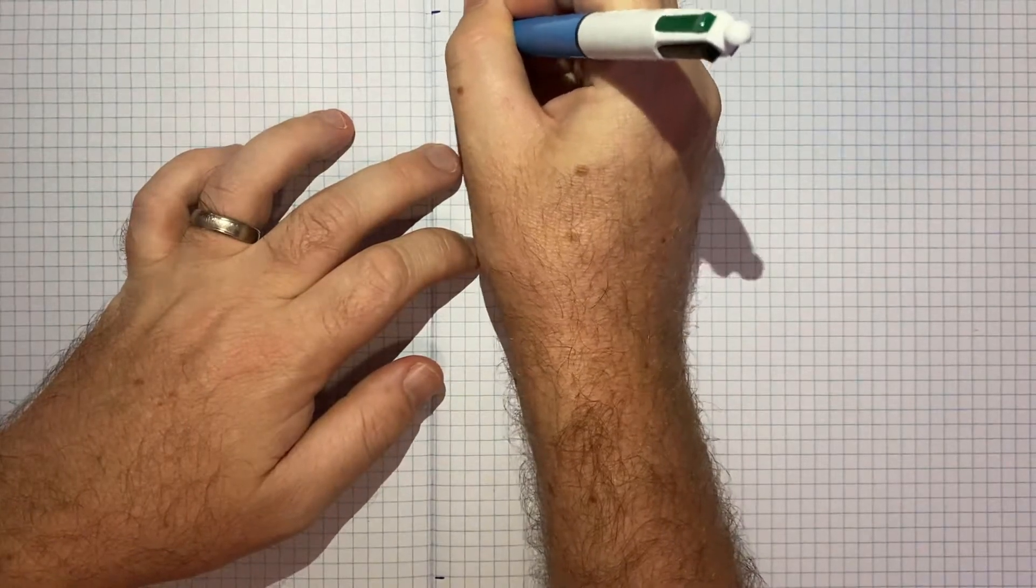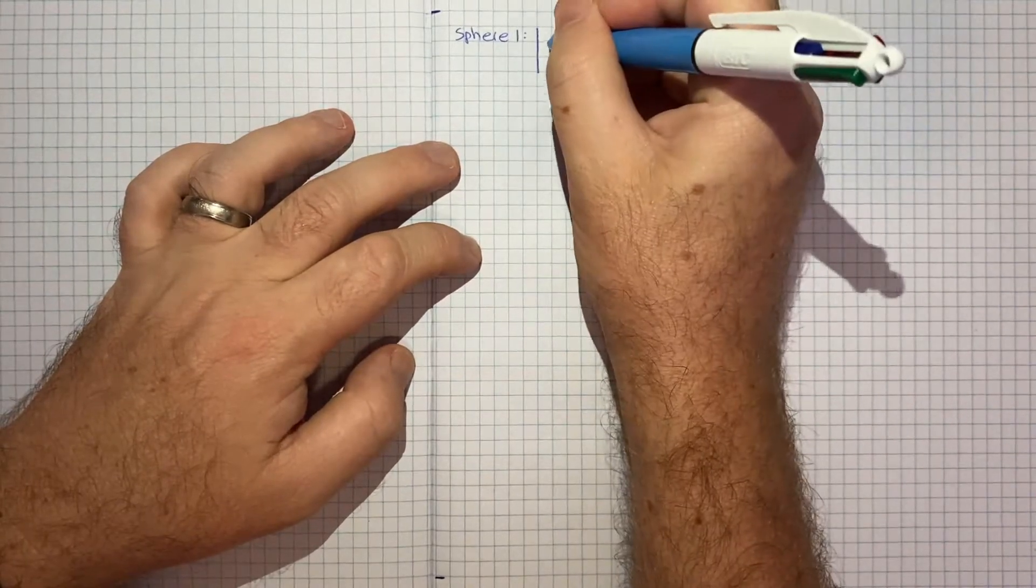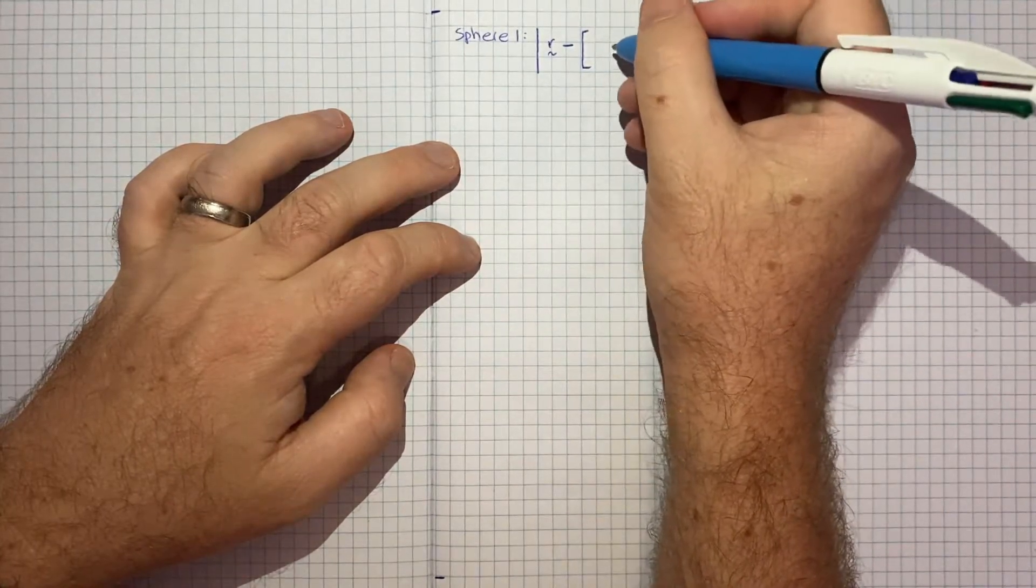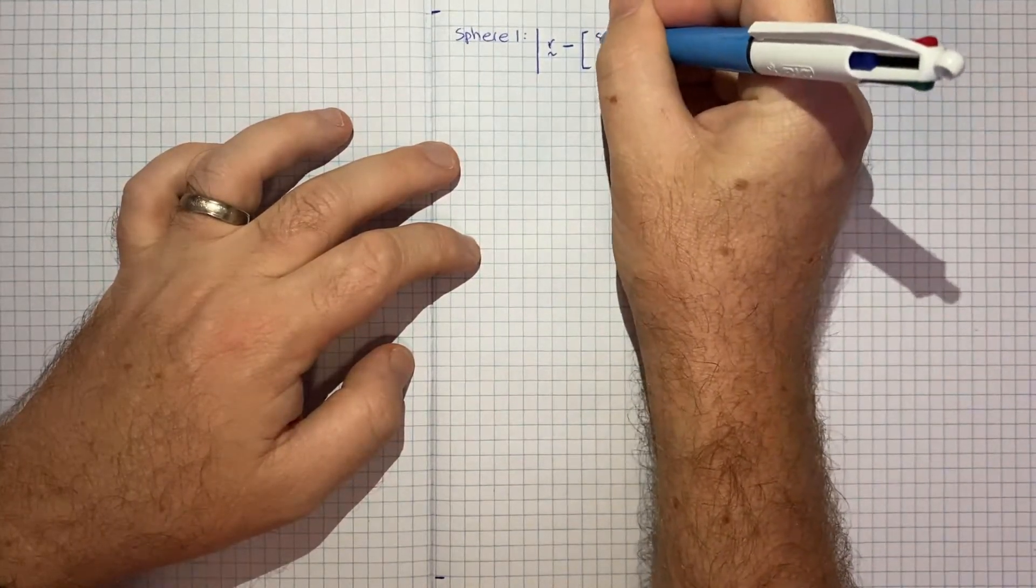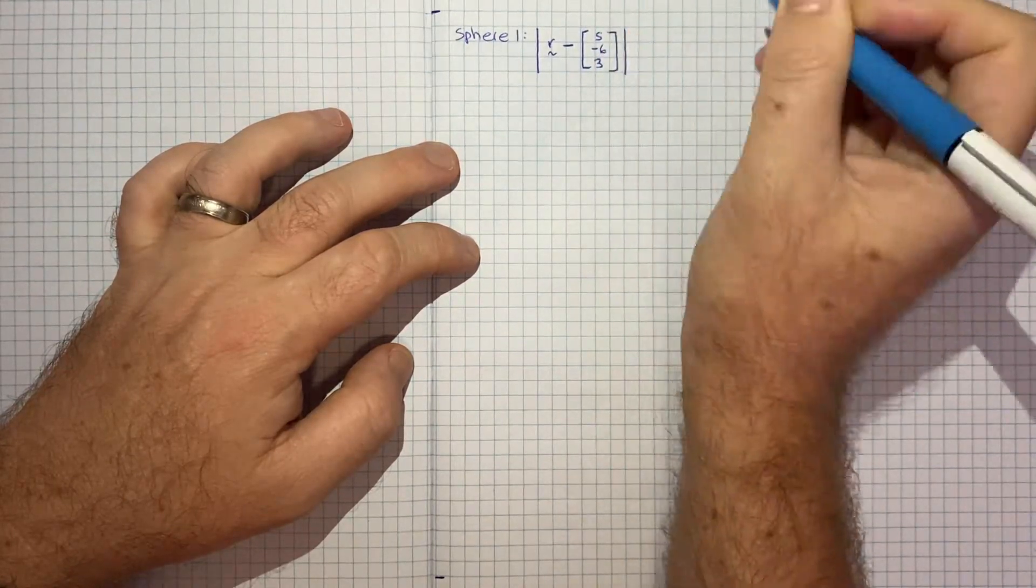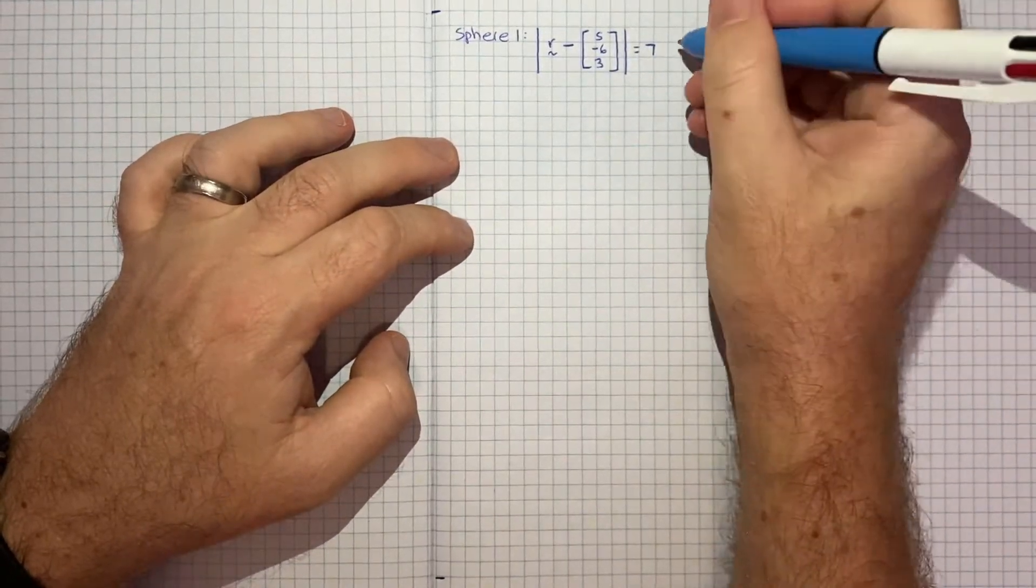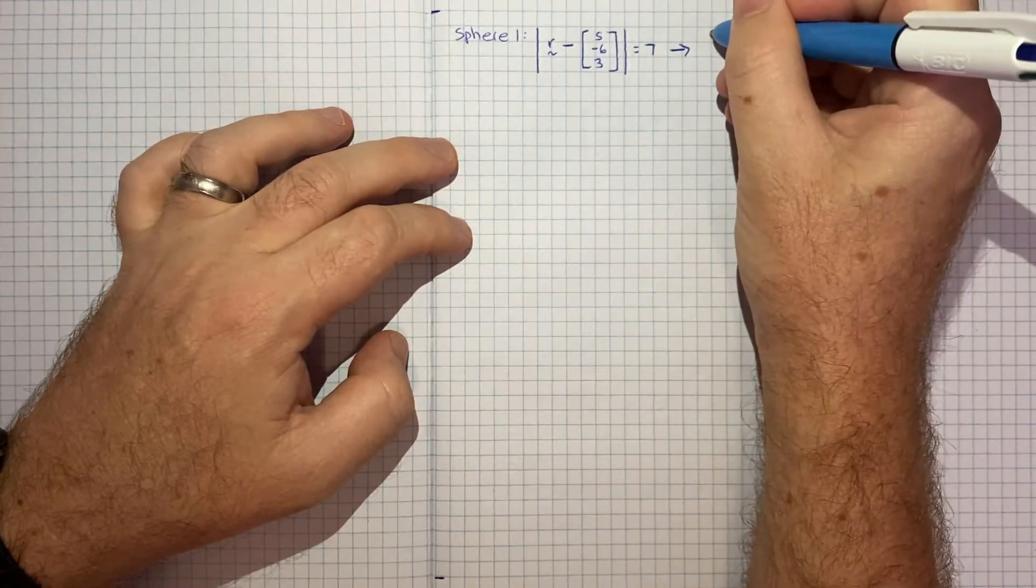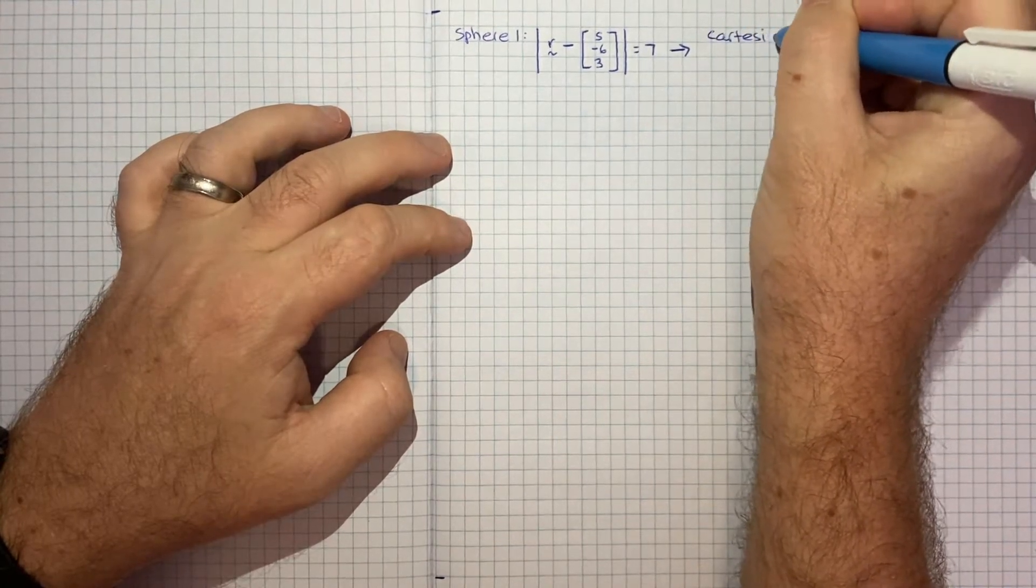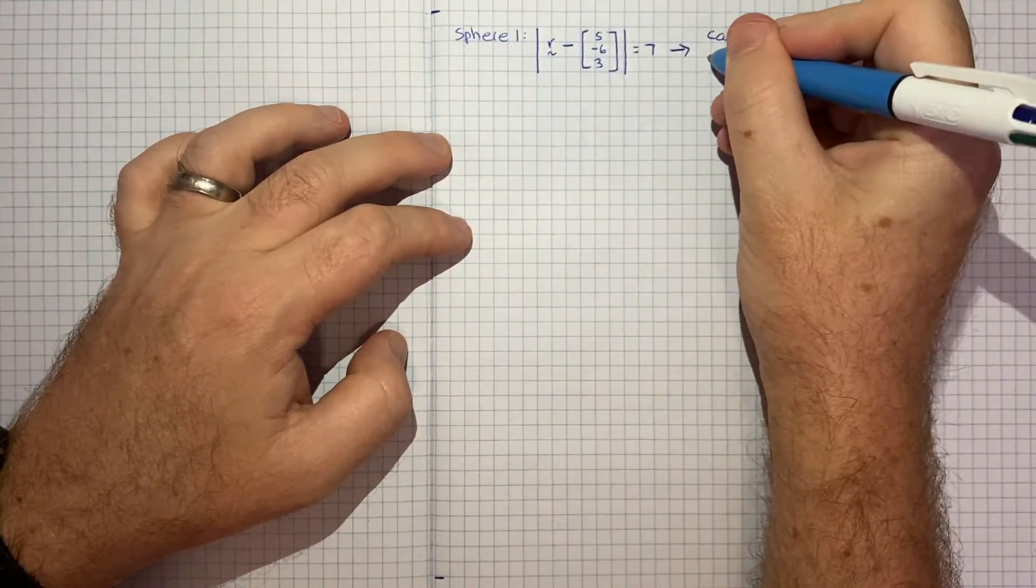We've got sphere 1 and the vector equation was the magnitude of r vector minus the center of the sphere vector, which was (5, -6, 3), and that magnitude equals 7. That's the vector way to represent the sphere. I think putting this in Cartesian form will make it easier to grapple with.